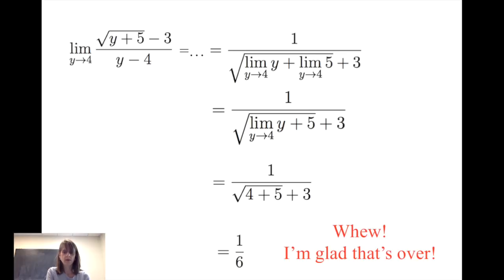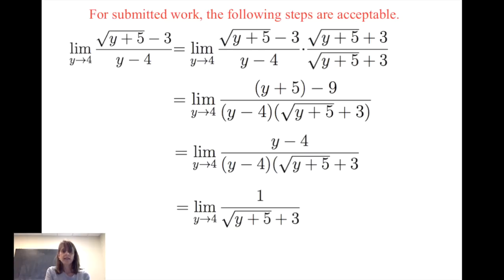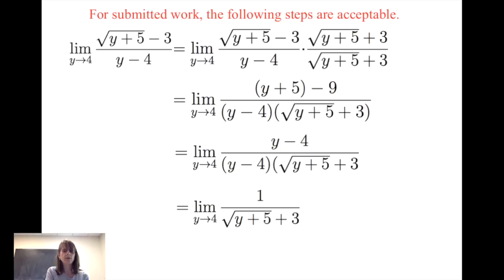Wow, that was a lot of work! That brings up the question of what would be expected on submitted homework or an exam. I'd like to see how the conjugate arises in the multiplication by one, then simplification down to the limit of one divided by the square root of y plus five plus three as y gets close to four. At that point you can say the limit laws give the evaluation of the limit as one sixth.